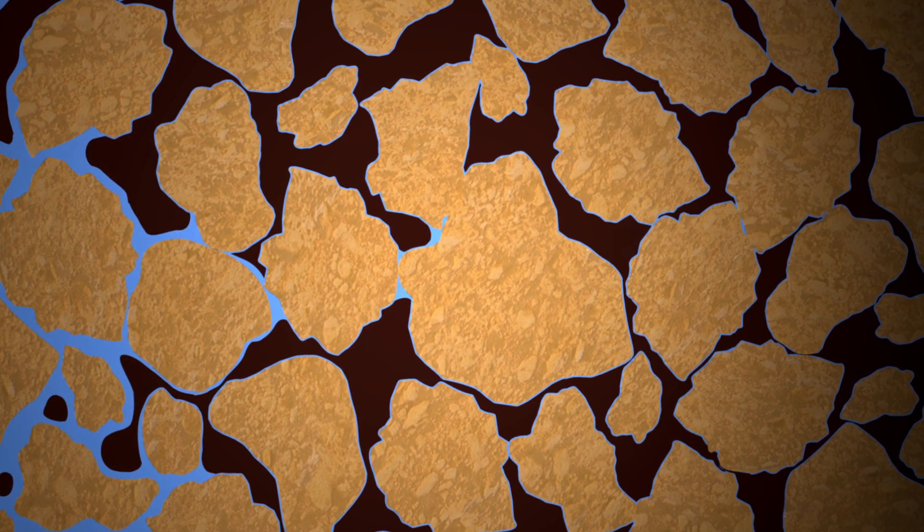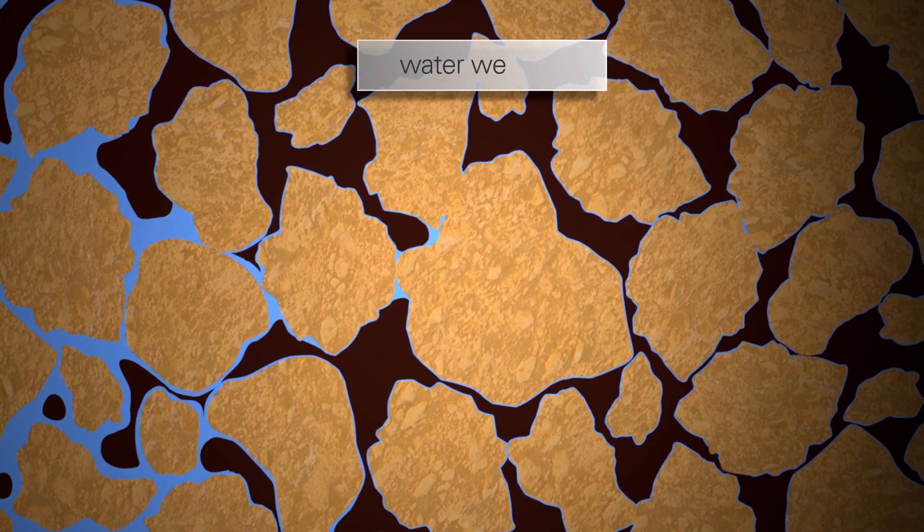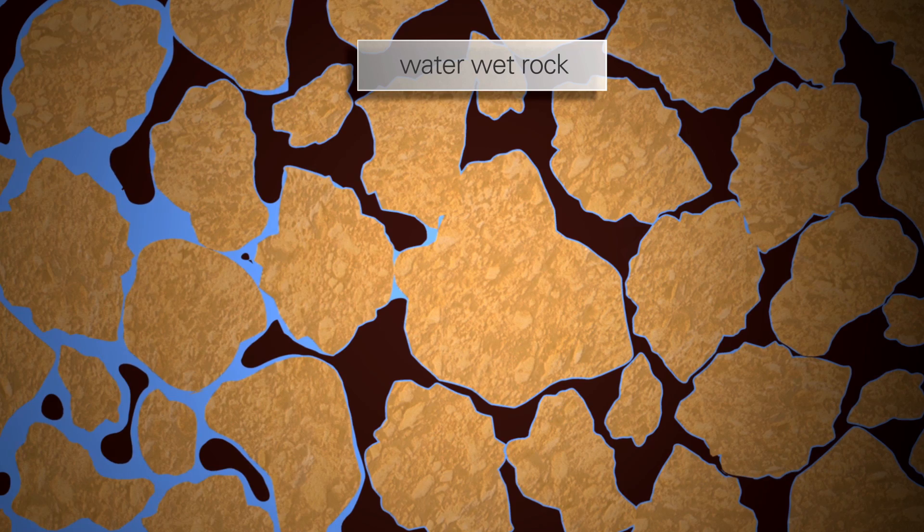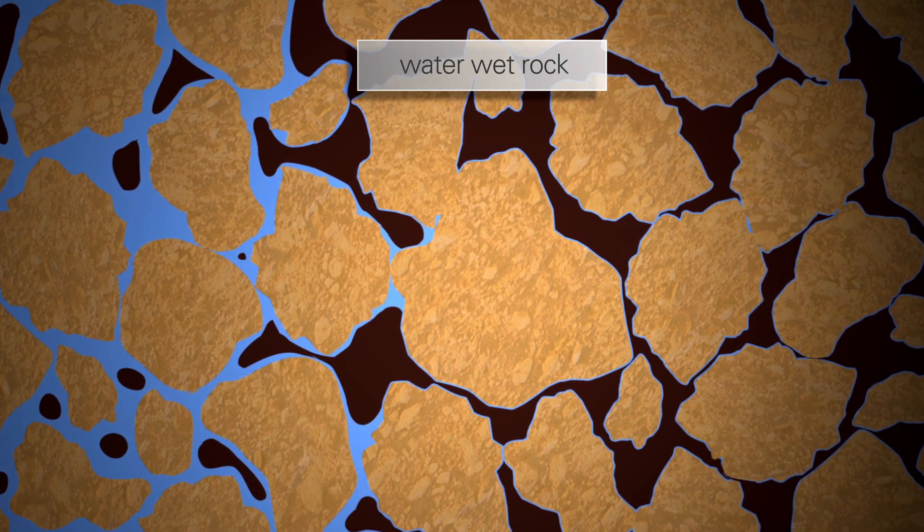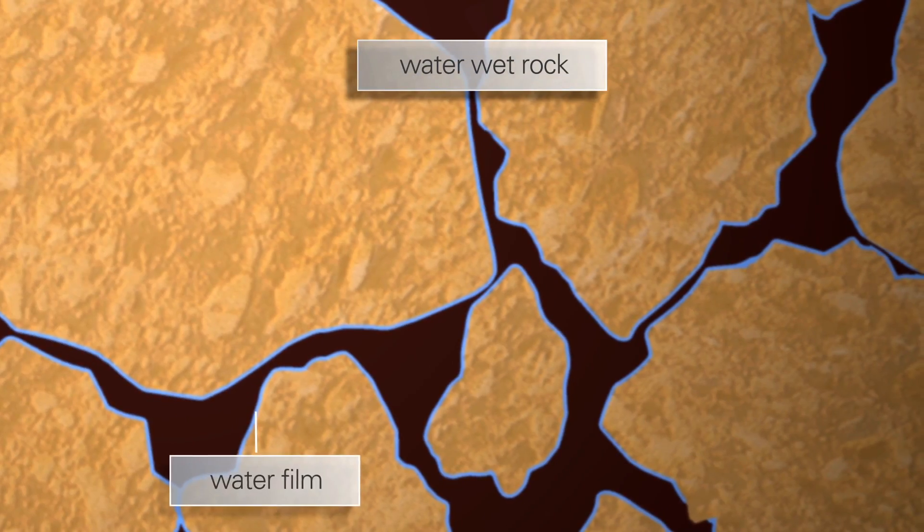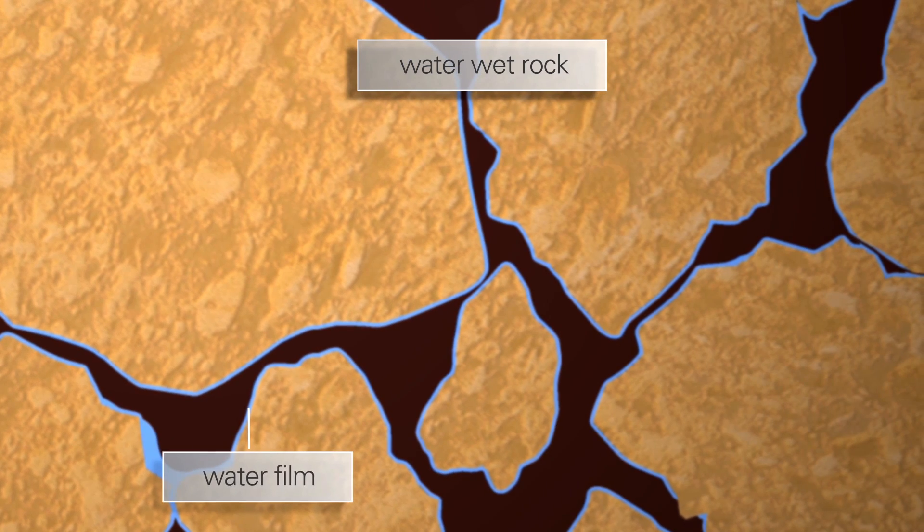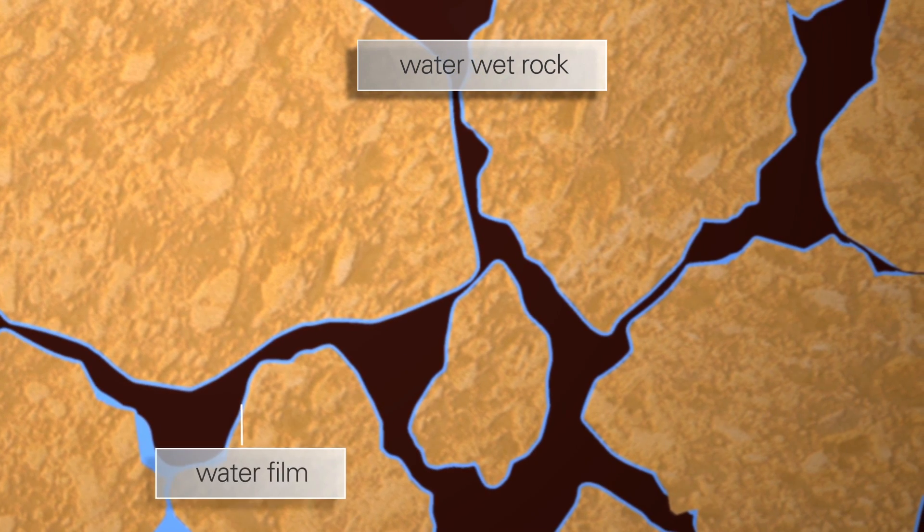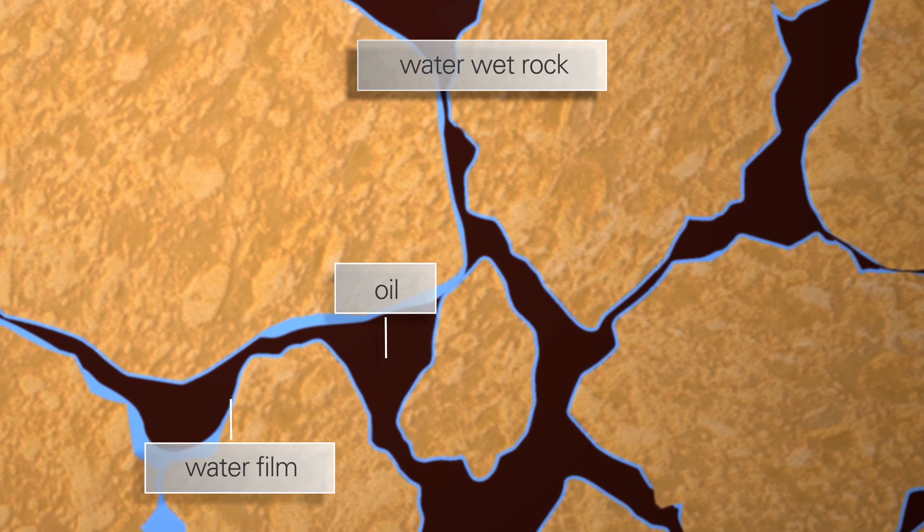In the first example, water comes in contact with water-wet rock. This happens when the rock attracts water and repels oil, so a thin film of water coats the sand grain surfaces. Here, the oil is generally found in the centre of the pores.